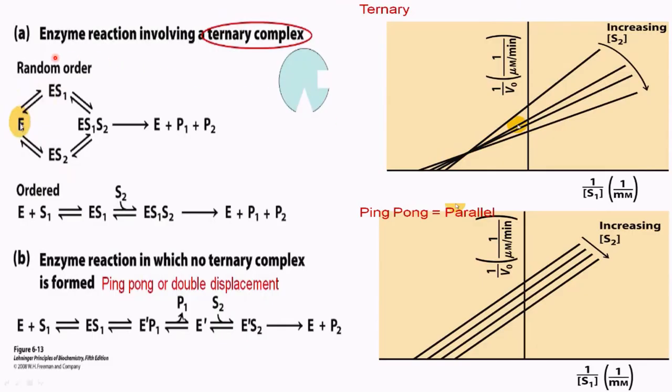Sometimes the enzyme can bind to two substrates at a time. That type of reaction involves the formation of a ternary complex where the first substrate will bind to the enzyme and another second substrate also binds to the enzyme to form a ternary complex. This ternary complex is further divided into two forms.